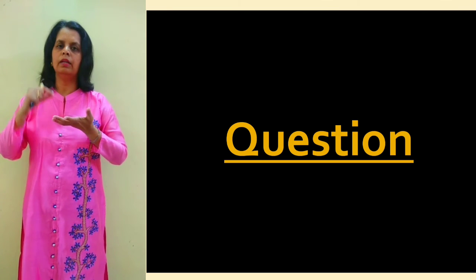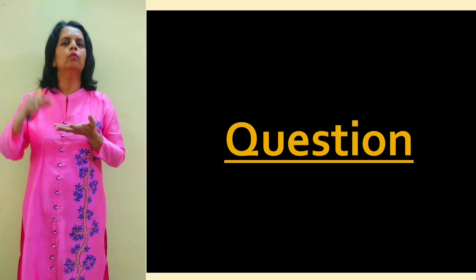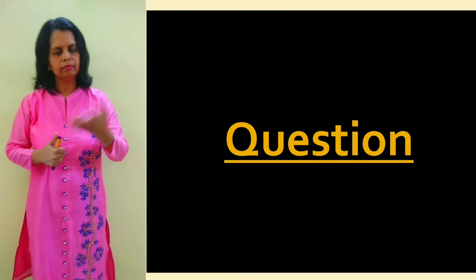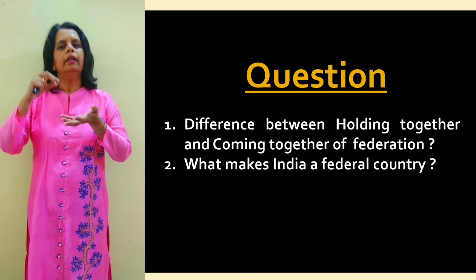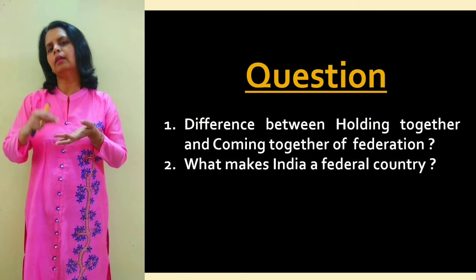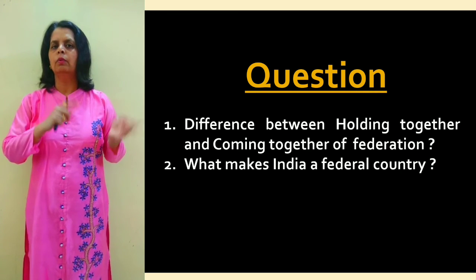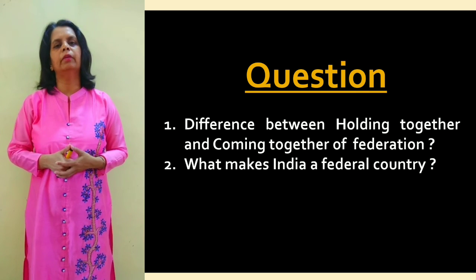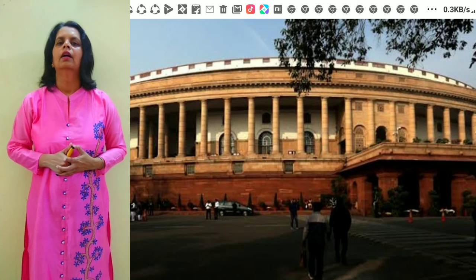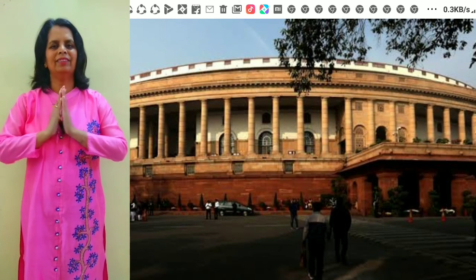Today we discussed the types of federation - holding together and coming together - and what makes India a federal country. For homework, take down these questions: first, explain or differentiate between holding together and coming together federation (three-mark question); second, what makes India a federal country (five-mark question). See you in the next lecture. Goodbye, take care, stay safe. Thank you.